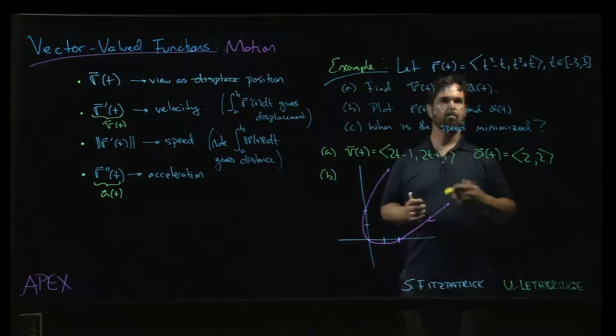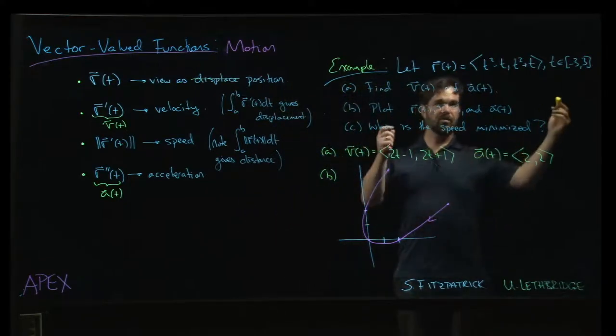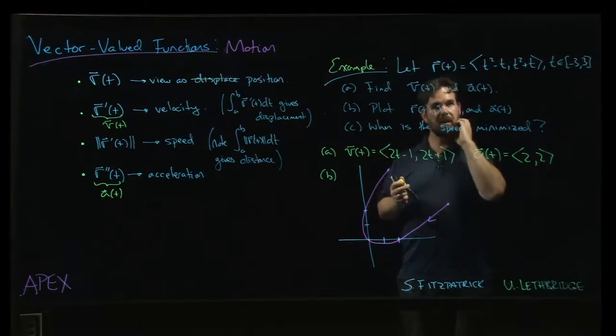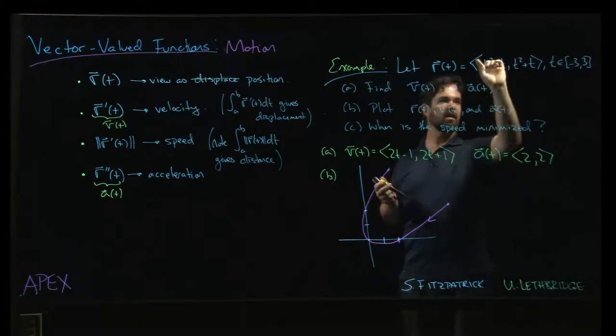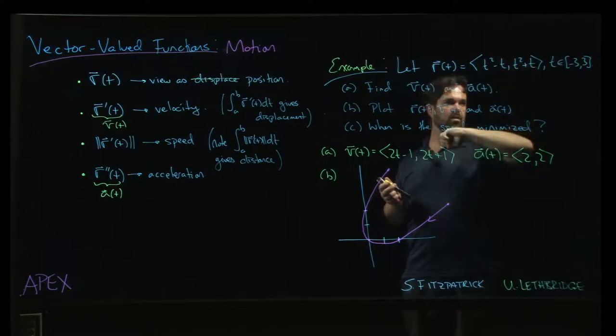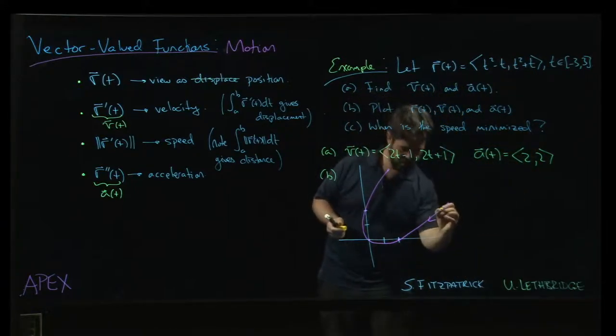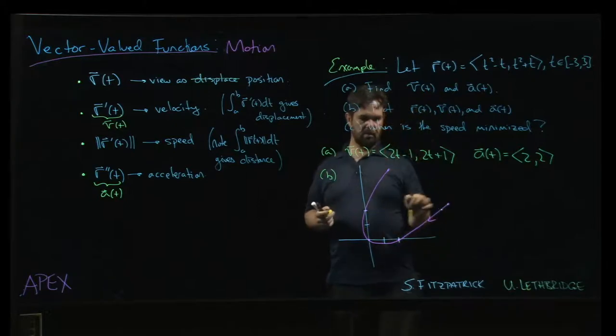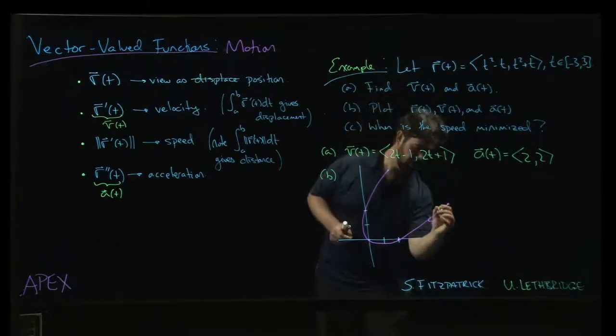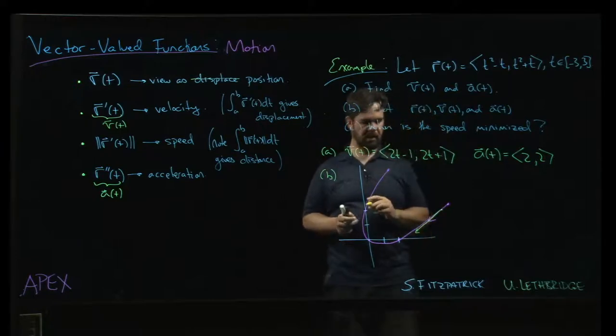so let's say if we do t equals minus 2, for example. Okay. So that's going to be 6. That's going to be a 2. So at the point 6, 2, which, you know, is out here somewhere. And if I plug minus 2 into here, I'm going to have minus 5 and minus 3. And I'm going to have this vector pointing that way.